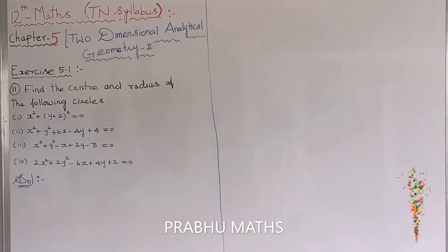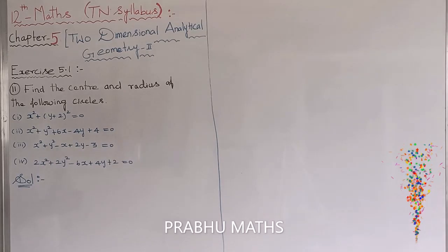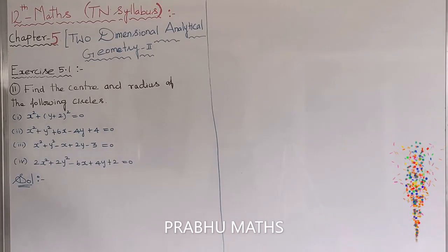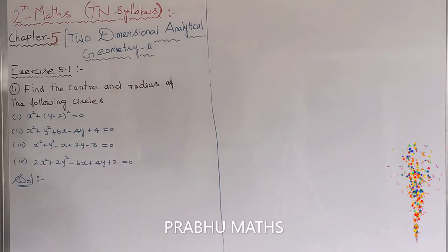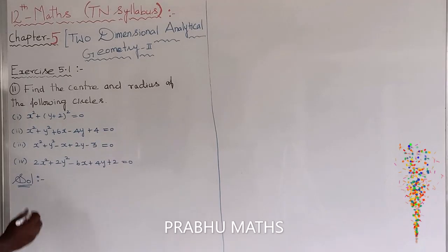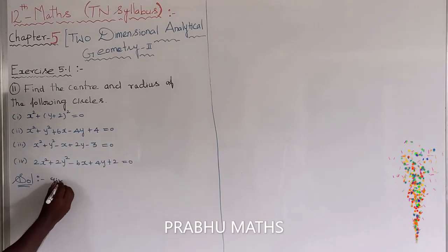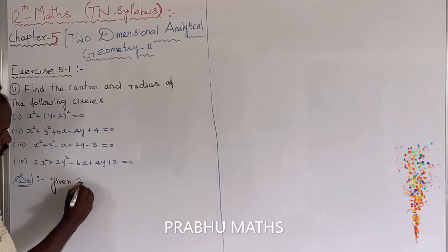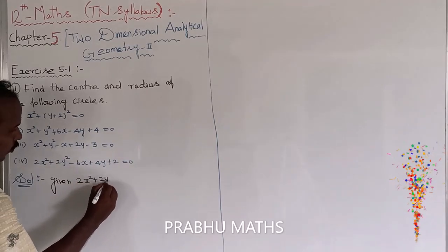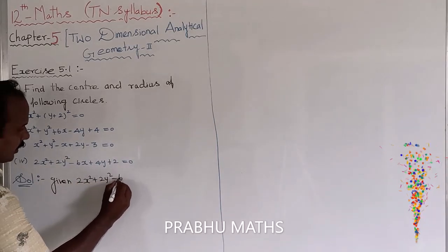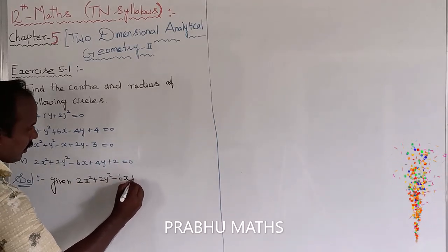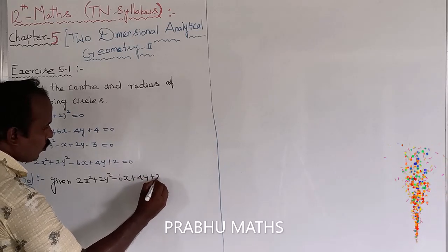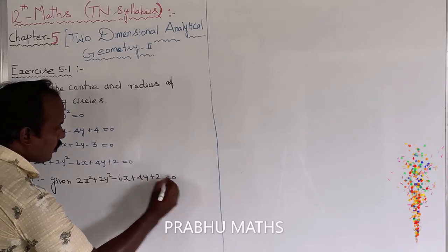This is the 11th sum, fourth subdivision. The given circle equation is: 2x squared plus 2y squared minus 6x plus 4y plus 2c equals 0.